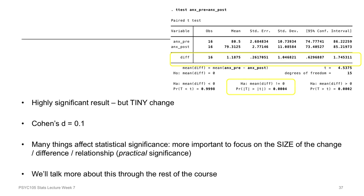I'll be talking about effect sizes every week from now until the end of the session, using information about the size of the effect in conjunction with the significance of the effect when interpreting results. It's a really important thing to think about because the size of the effect often gives much better information than just the significance. The effect size is a more robust measure of what we're actually investigating, since many things can affect statistical significance.